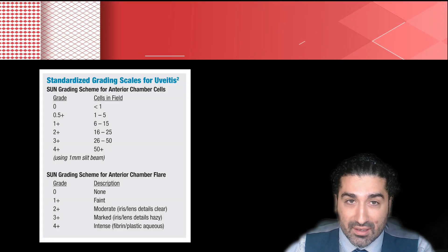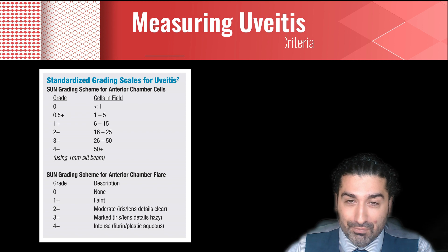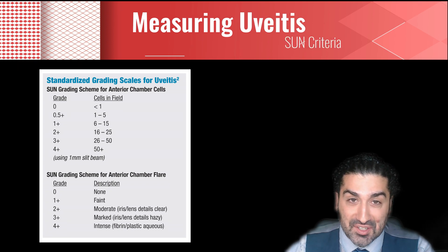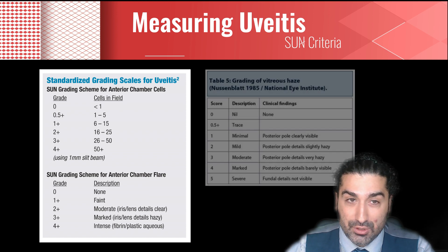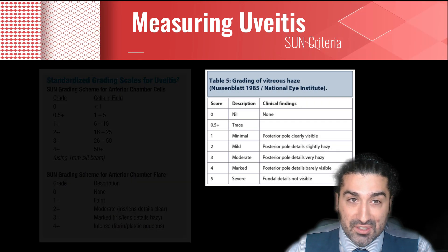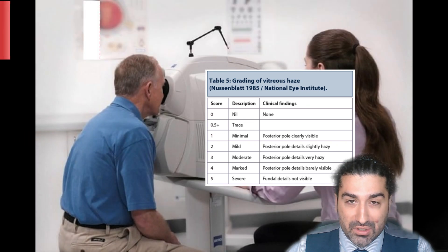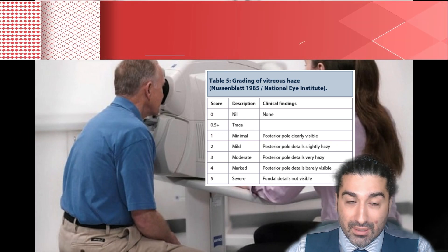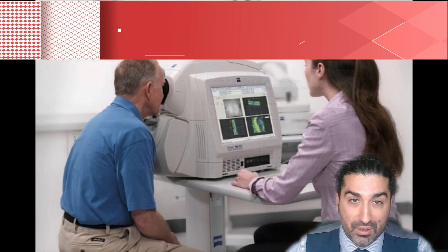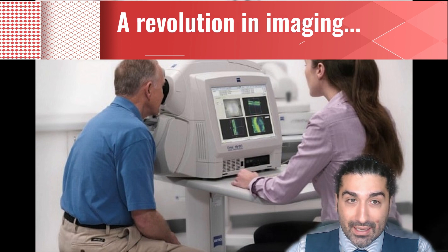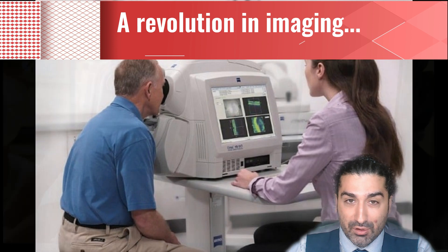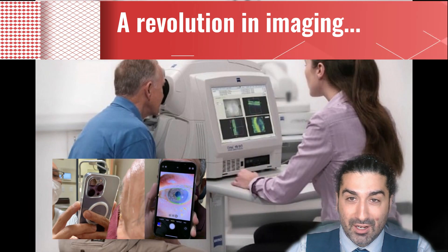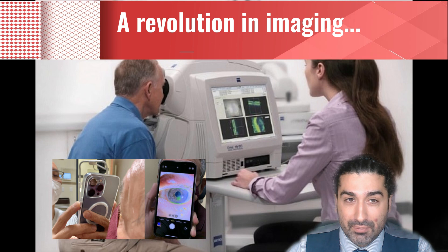Can we measure uveitis? The Standardization of Uveitis Nomenclature, or SUN criteria, was devised about 30 years ago and enables us to quantify cells and flare and the haze in the vitreous. We also use the now ubiquitous OCT imaging to quantify the degree of macular edema. Imaging is really useful whether with OCT, colour fundus, wide-field Optos, and when indicated, angiography. Sometimes even a smartphone photo, preferably using an encrypted platform, can help a lot.